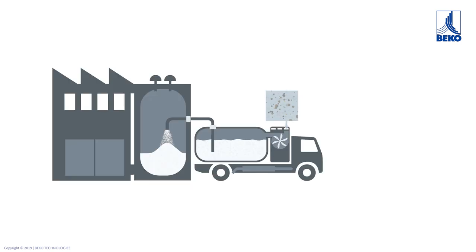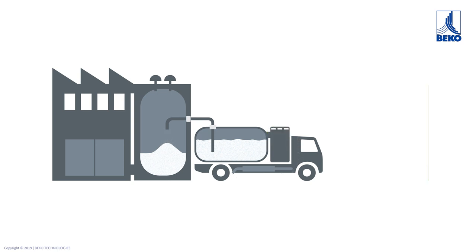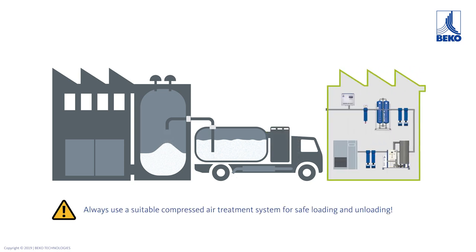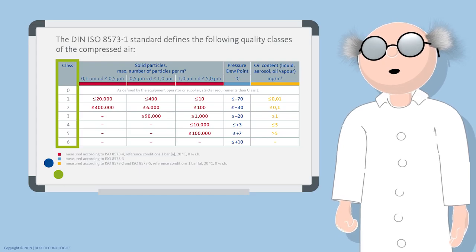The requirements for safe manufacturing do not only apply to one's own production but also to each supplier, for the entire production process including transport. The example with the truck shows that even a clean product can still be contaminated in the last few meters via the truck's compressor — unfiltered ambient air would be sucked in and used for the unloading process. A suitable compressed air treatment system must always be used for safe loading and unloading.